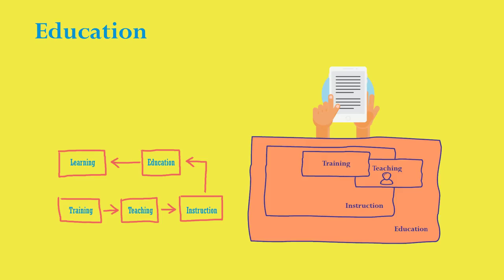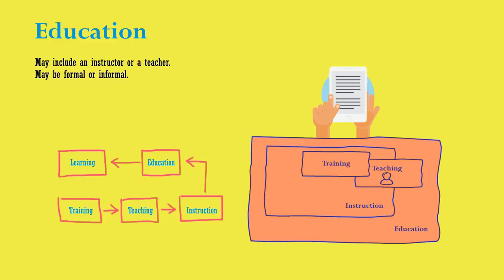How is the term education defined? We sometimes may feel like education occurs without a teacher or without training. Other times, education is very formal, such as that which occurs in the classroom. Sometimes education is informal, such as those life experiences from which we learn. In the whole, education is a broad term. So, we see instruction, training, and teaching as some subset of education.